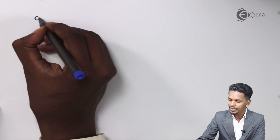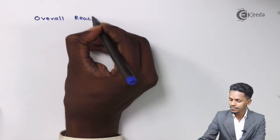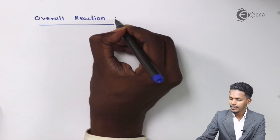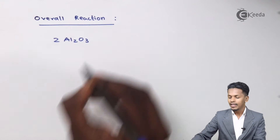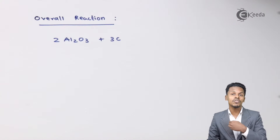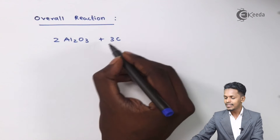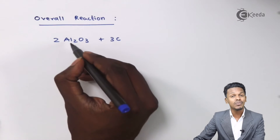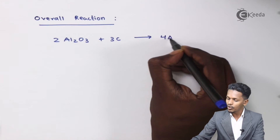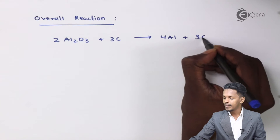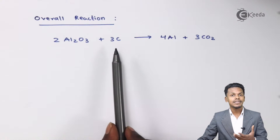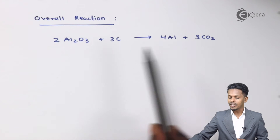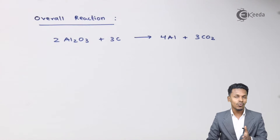The overall reaction that takes place in the electrolytic cell is: 2Al2O3, that is alumina, when it reacts with carbon — because we are also sprinkling carbon on the surface of the molten solution — this carbon helps reduce the Al2O3, thereby we obtain 4 moles of aluminum and the rest is removed in the form of carbon dioxide. So this is the overall reaction, but there are also other reactions that take place.